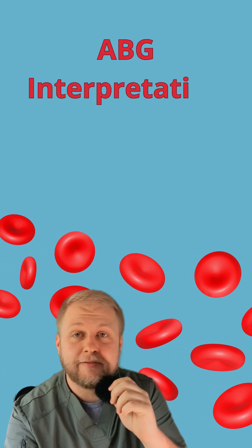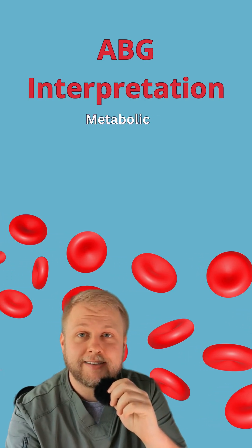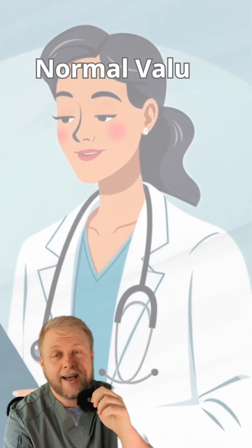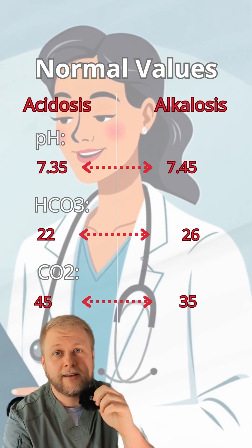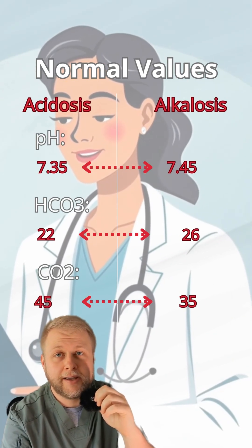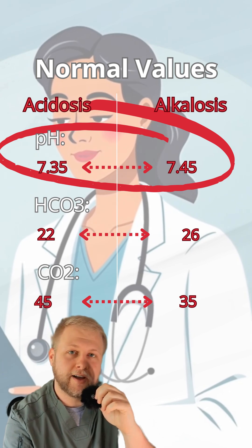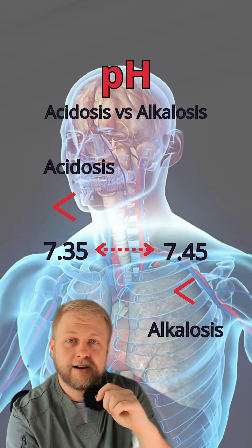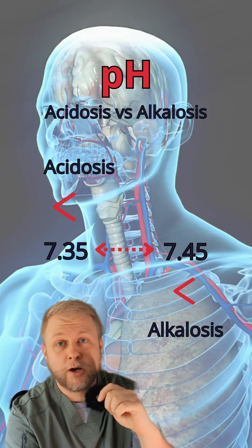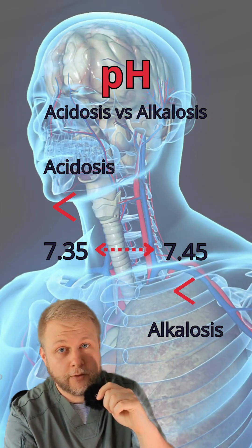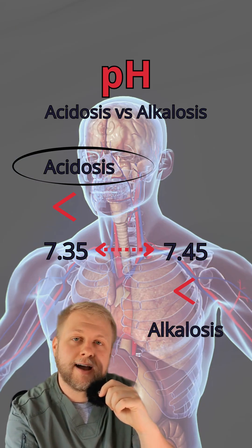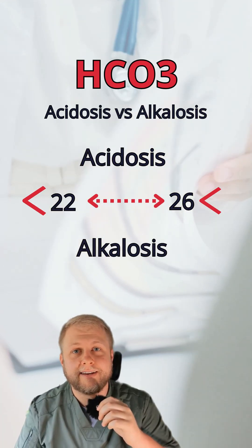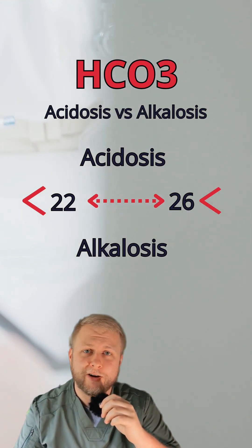In my opinion, this is the easiest and fastest method to get a basic interpretation of ABGs. First things first, you're going to have to know your normal values. Let's look at that pH — 7.35 to 7.45. The pH is going to determine if we're acidotic or alkalotic: anything lower than 7.35 is an acidosis, and everything higher than 7.45 is an alkalosis.